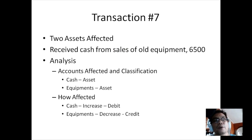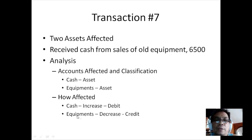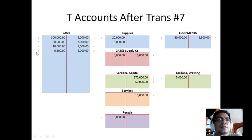Transaction 7: Two assets are affected. We received cash from the sale of an old equipment amounting to 6,500. Cash (asset) will increase, so we debit Cash 6,500. Equipment (asset) will decrease because we sold it, so we credit Equipment 6,500. In the T-accounts, transaction 7 debits 6,500 to Cash and credits 6,500 to Equipment.